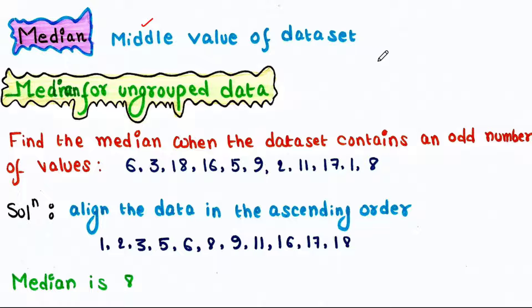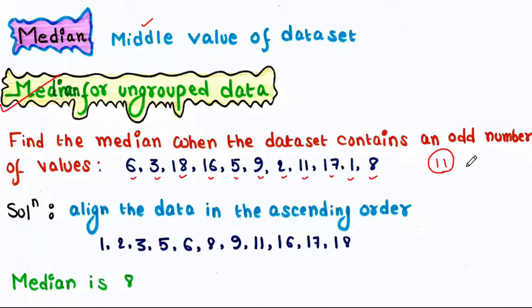First we will see how to detect median for ungrouped data. In this example, find the median when the data set contains an odd number of values: 6, 3, 18, 16, 5, 9, 2, 11, 17, 1, 8. Here we have a total of 11 values, which is an odd number. First, align the data in ascending order.